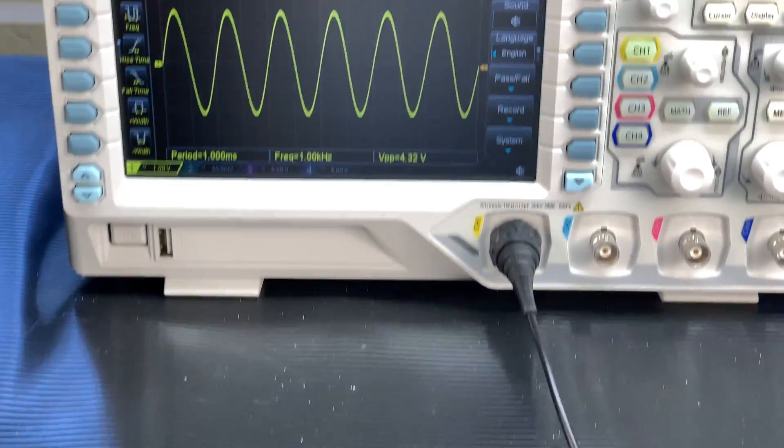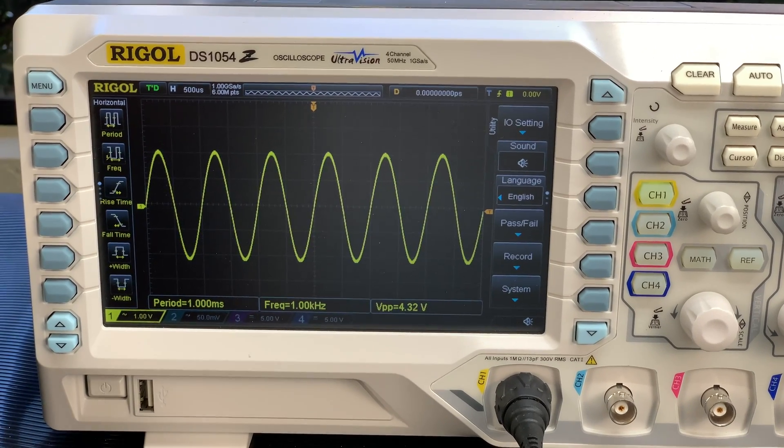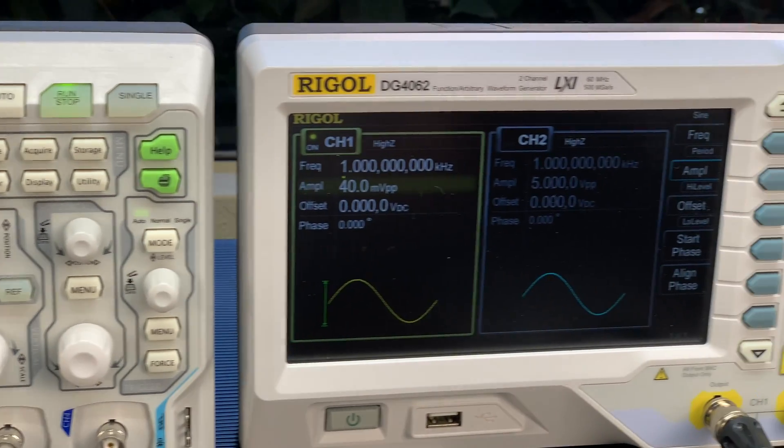As I mentioned in the beginning of the video, I'm going to use this AF amp in my regenerative receiver that I'm building. It can be used anywhere where you would need a power amp to drive a 4 to 32 ohm speaker.